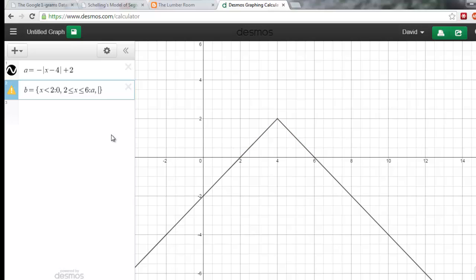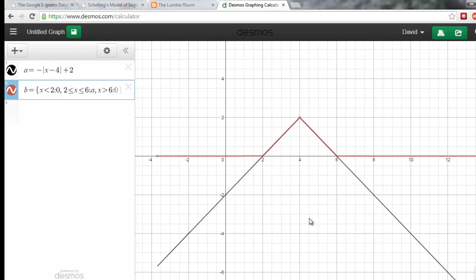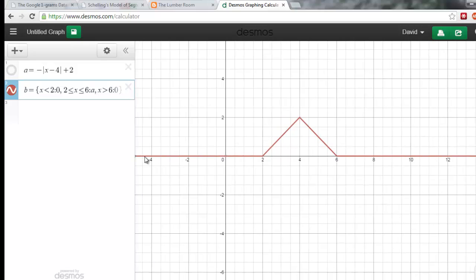Now I'll specify the third part of my piecewise defined function. This is going to be in the domain x is larger than six. I will use a colon to tell it what I want the y value to be. And when I type zero, now if I hide my original function, you see I've got my piecewise defined function is defined for all real numbers. And it's zero everywhere except for this little portion of the hat.